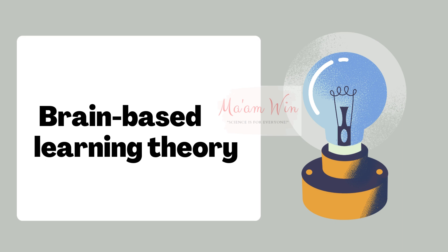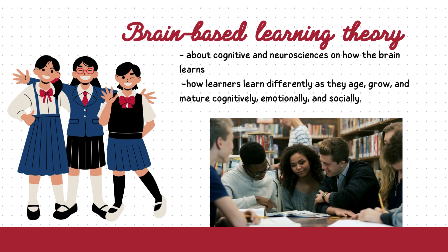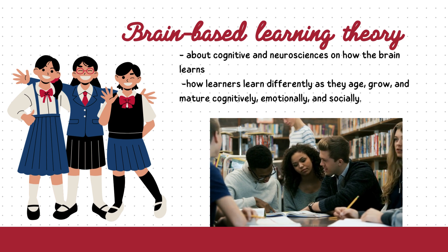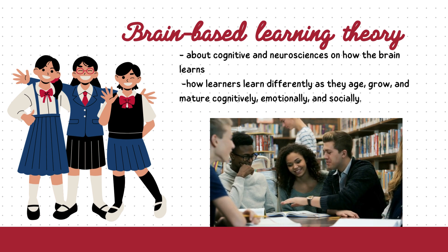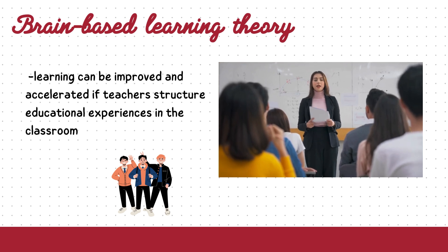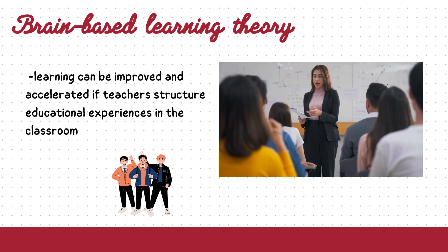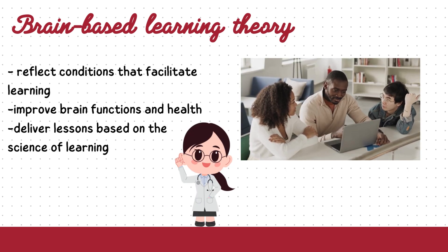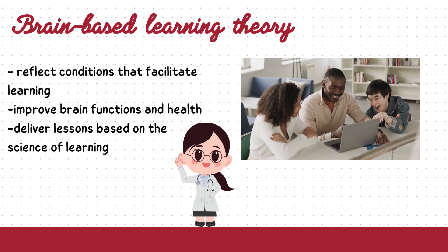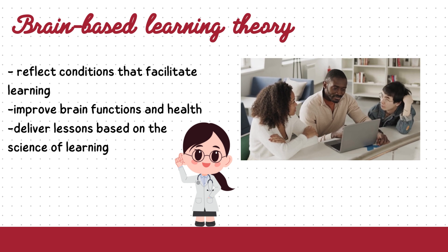Let us now proceed to the last theory: brain-based learning theory. It puts emphasis on recent research in cognitive and neurosciences on how the brain learns and how learners learn differently as they age, grow, and mature cognitively, emotionally, and socially. It strongly suggests that learning can be improved and accelerated if teachers structure educational experiences in the classroom that reflect conditions which facilitate learning, improve brain function and health, and deliver lessons based on the science of learning.